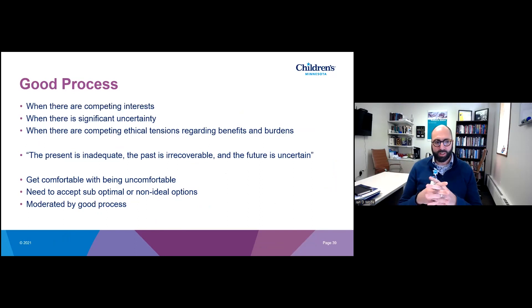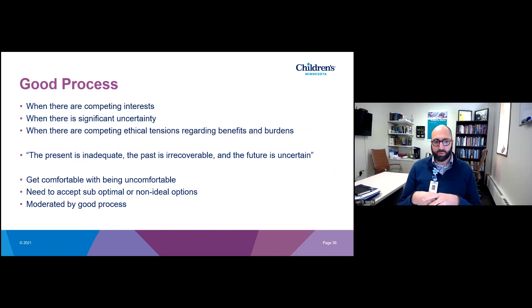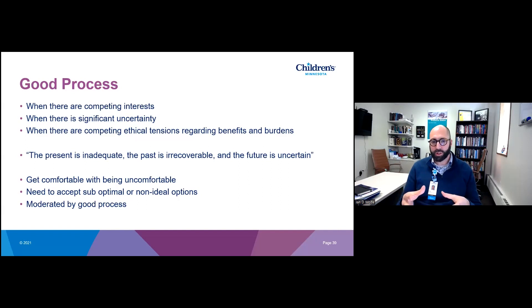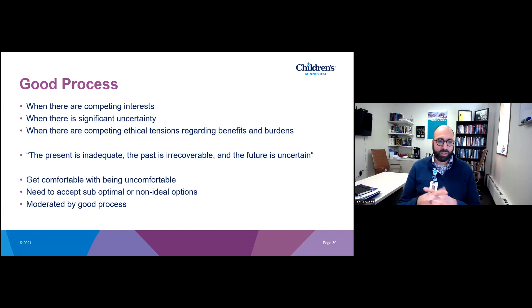This gets into considerations of good process. Whenever there's competing interests, significant uncertainty, and competing ethical tensions regarding benefit-burden balance, I like to look at how are we providing good process going forward. The Schopenhauer quote I like is: 'the present is inadequate, the past is irrecoverable, and the future is uncertain.' With Cassandra, we have a child with cancer — we can't change that. We have uncertainty around the current decisions. The future we don't really know. This speaks to how we provide best process going forward, balancing all these complexities toward the best possible, or maybe even the least worse, path forward.